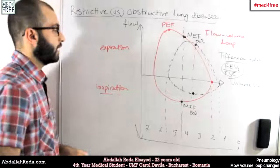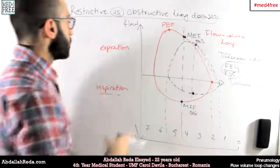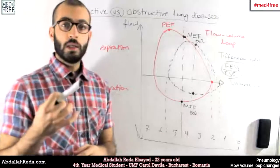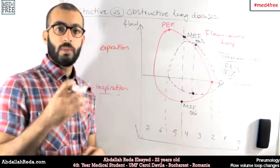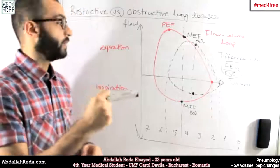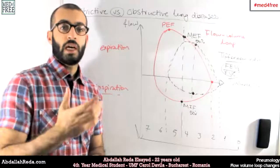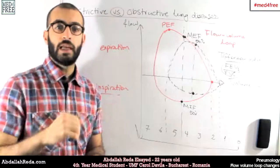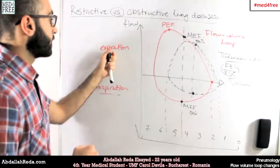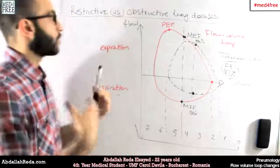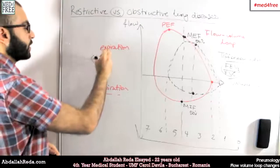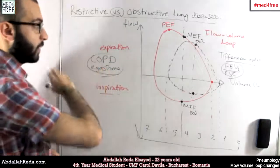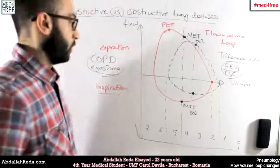In obstructive lung diseases, something obstructs the airflow so that expiration is not done properly. The person can inspire, but when trying to expire, something is obstructing the flow. Examples include tumors, bronchiectasis, emphysema, and the most common — chronic obstructive pulmonary disease (COPD) — as well as asthma.